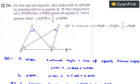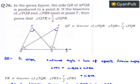And also, since TR is the bisector of angle PRS, we can say that angle TRS is equal to half times angle PRS.